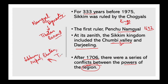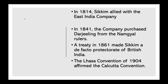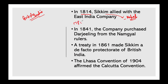Under British India, in 1814 Sikkim allied with the East India Company in the latter's campaign against Nepal. After the Company won, it restored to Sikkim some of the territories that Nepal had wrested from it in 1780. Then in 1841, the Company purchased Darjeeling from the Namgyal rulers.